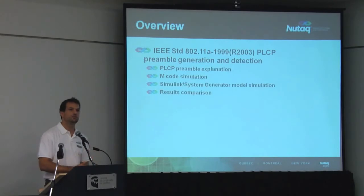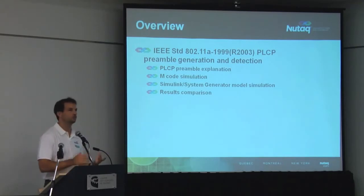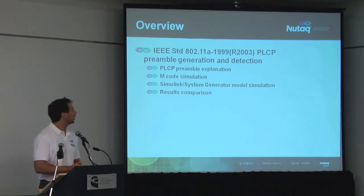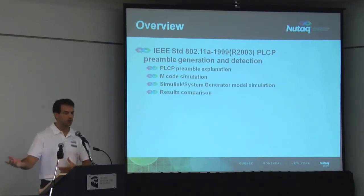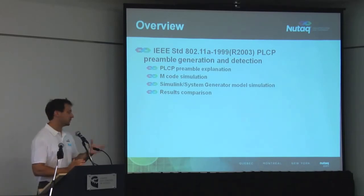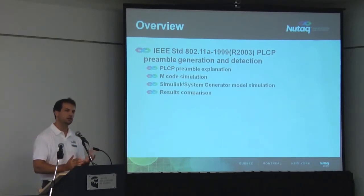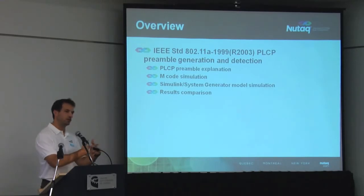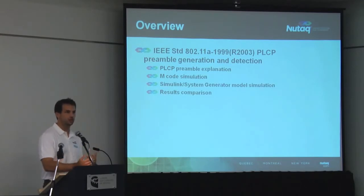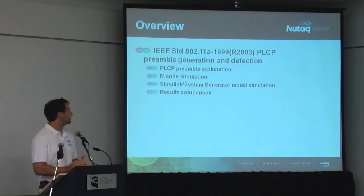We'll start with the generation of that preamble, then we'll cover how to detect such a preamble — which is important in OFDM to decode the block boundary of an OFDM packet. After that, I'll show how we can move to a real-world application with an actual processor like an FPGA. The main point is to show how we can easily move from M code to a System Generator model, and use tools to help debug and make the transition to an FPGA HDL world flawlessly.